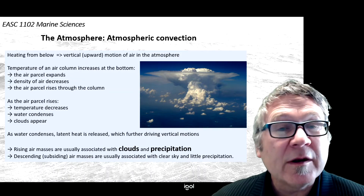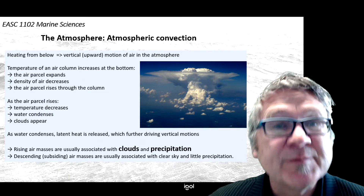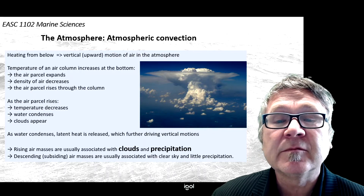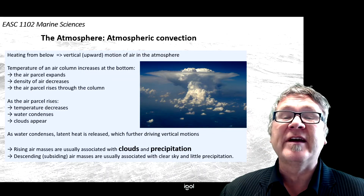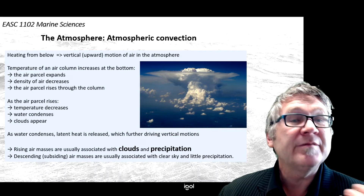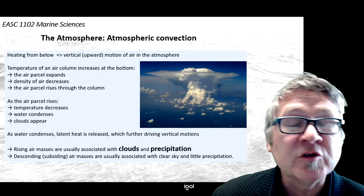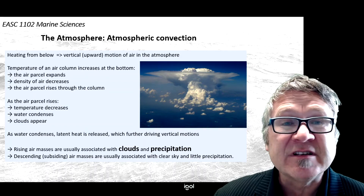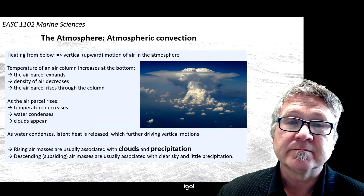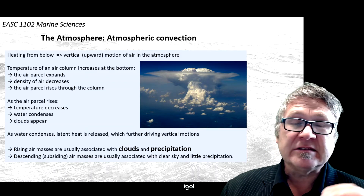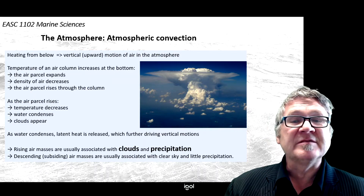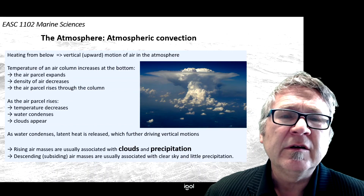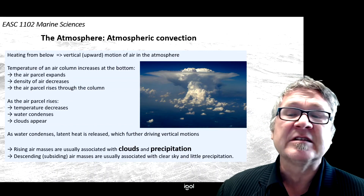Now we come to one important aspect of processes in the atmosphere which is called atmospheric convection. This mechanism will help you to understand the monsoon, wind, and the sea breeze system. So let's just go step by step through this mechanism of atmospheric convection.